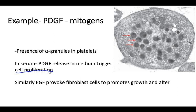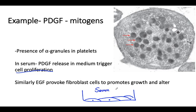Normal cells in media always require serum. If serum is present, its key ingredient — platelet-type growth factors — drives proliferation. These factors are called mitogens because they trigger cell proliferation. This initial step is dependent on the presence of mitogenic or platelet-type growth factors.